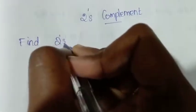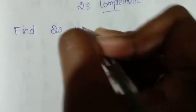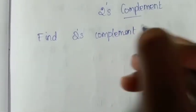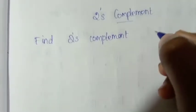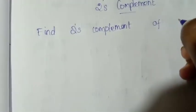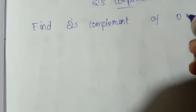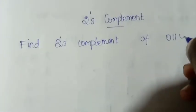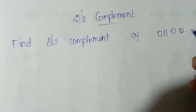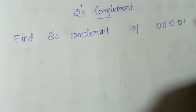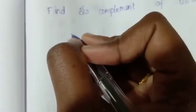Find two's complement of 0, 1, 1, 0, 0, 1. Then first you can find the one's complement.